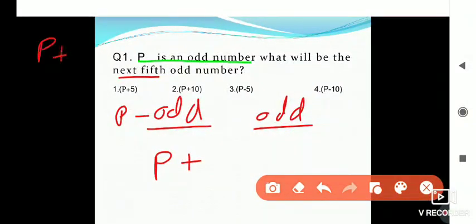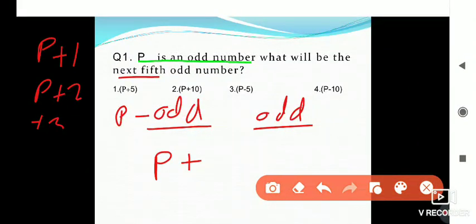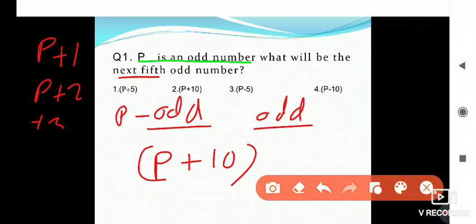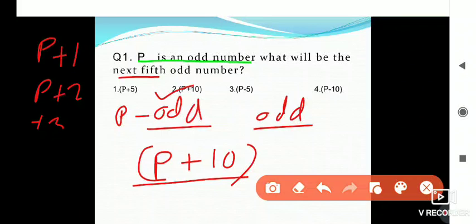If we go P+1, P+2, P+3, and so on, odd and even alternate. To find the 5th odd number, we double 5 to get 10. So if they are asking which is the next 5th odd number, it is P + 10.